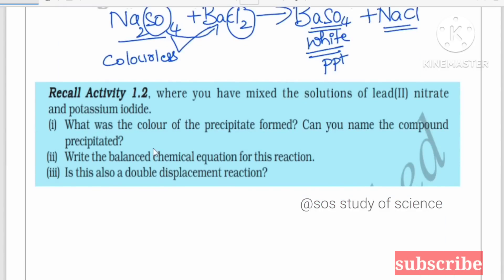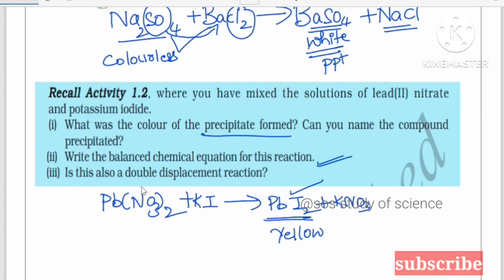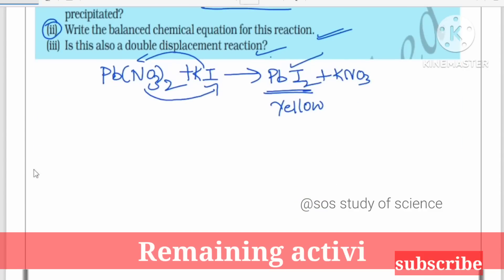Next, Activity 1.2 is revisited. Lead nitrate Pb(NO3)2 reacted with potassium iodide KI forms lead iodide PbI2 along with potassium nitrate KNO3. The color of the precipitate is yellow. This is a double displacement reaction because the ions mutually exchange. Try to write the balanced chemical equation for lead nitrate with potassium iodide and mention it in the comment box.